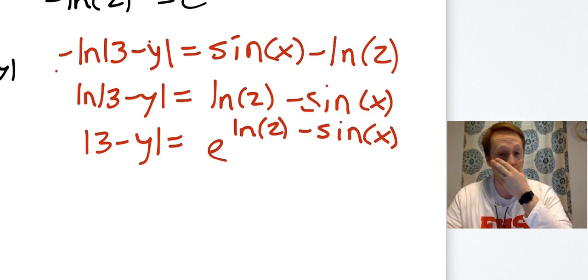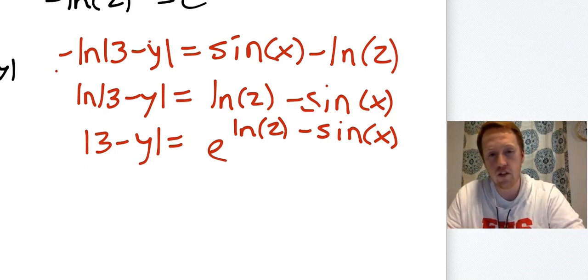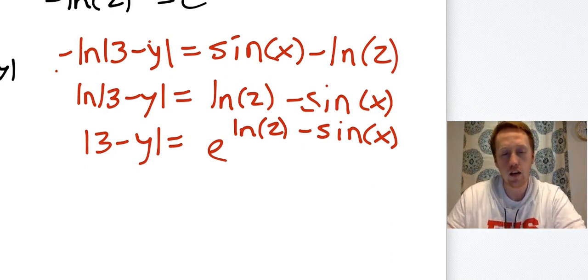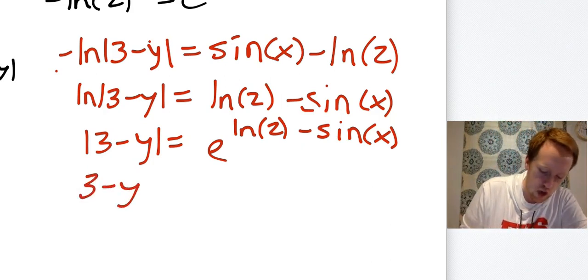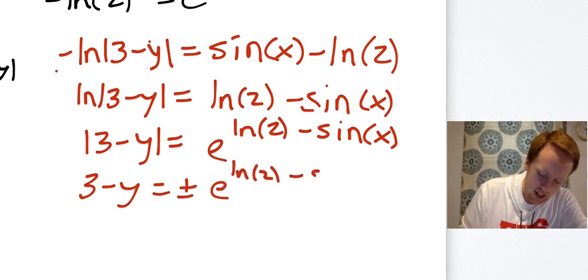But what I do have to figure out is I need to get rid of these absolute value bars. So I need to figure out, should it be plus e to the whatever that stuff is, or should it be minus e? So that's the way we get rid of absolute value bars, right? We say 3 - y = ±e^(ln(2) - sin(x)).